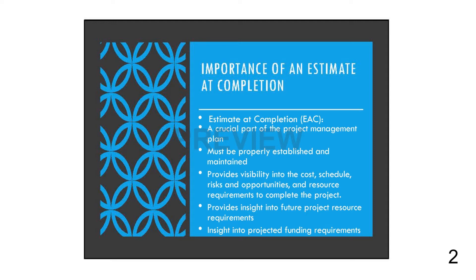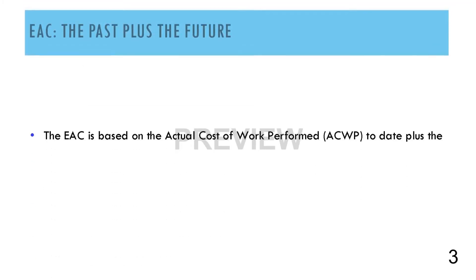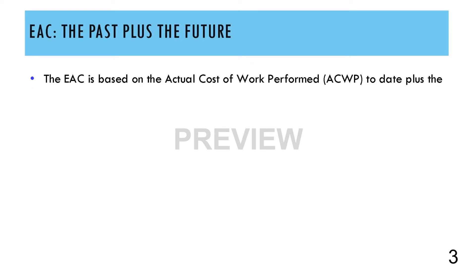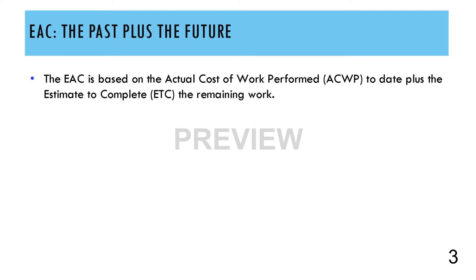The basic formula for any EAC is the actual costs of the work performed, or ACWP — the past — plus the estimated cost to complete the remaining work scope — the future. This is also called the Estimate to Complete, or ETC.